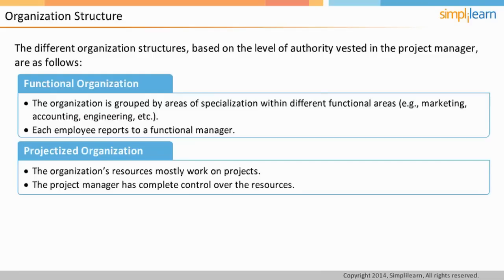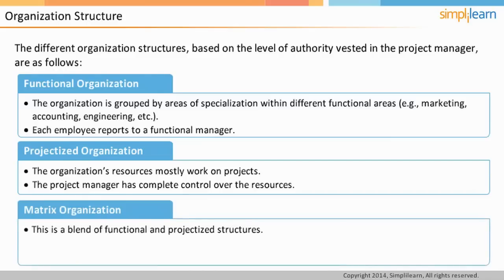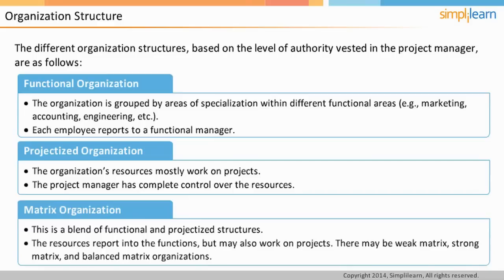They do not have a department for themselves. The third type of organization is a matrix organization, which is a blend of functional and projectized organizational structure. A team member belongs to a department as well as being part of a project team. In such organizations, team members have two bosses: their department head and their project manager. Since there are two bosses, this type of organization is further classified into three different types: weak, balanced, and strong matrix organization.